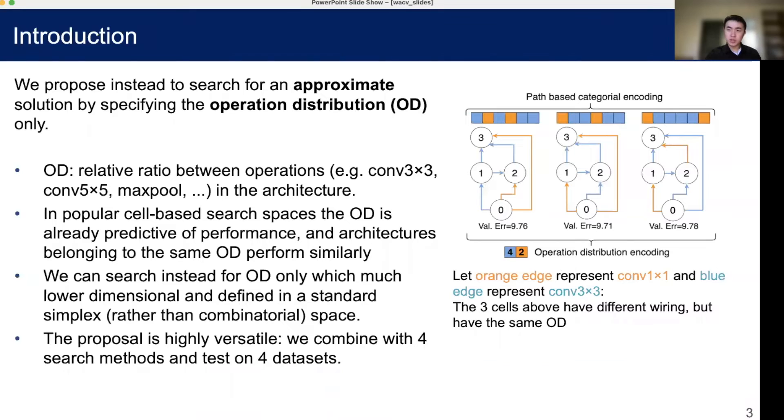We find that we don't. Instead, we could use an approximate solution by specifying the operation distribution, or OD only. The OD specifies a relative ratio between operators in the architecture. The right illustration shows how three different architectures can have different connection patterns, yet have the same operation distribution, because they all have four conv3x3 and two conv1x1. We found that in cell-based search space, OD is already highly predictive of performance, and architectures belonging to the same OD perform very similarly. So we could just search for the OD instead of searching for the exact architecture, which is much easier.